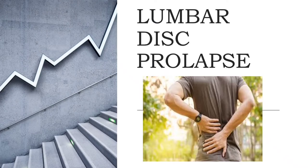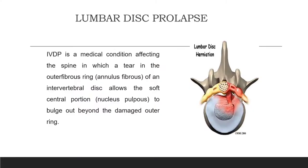Today we will discuss lumbar disc prolapse, which is a very common cause for low back pain. Lumbar disc prolapse is a medical condition affecting the spine in which the outer fibrous ring, the annulus fibrosus, of an intervertebral disc allows the nucleus pulposus — the central portion of the disc — to bulge out beyond the damaged outer ring.